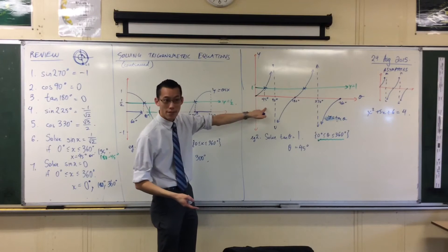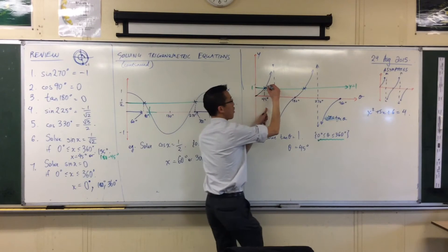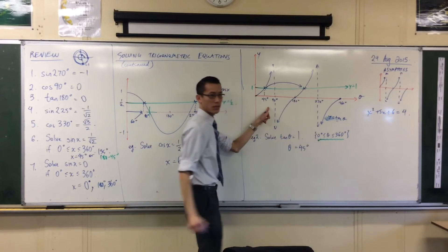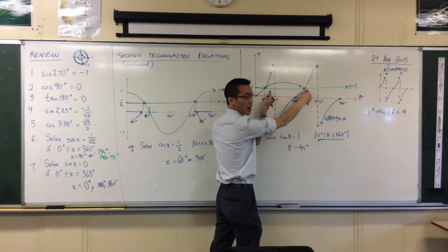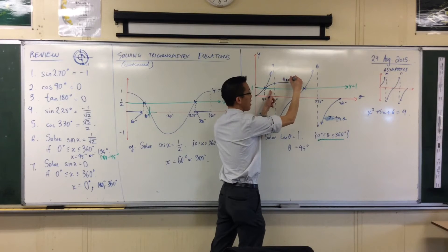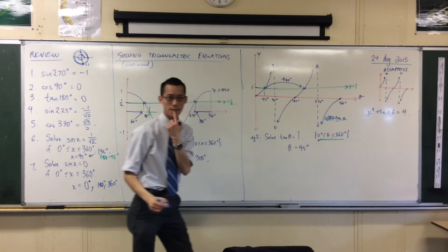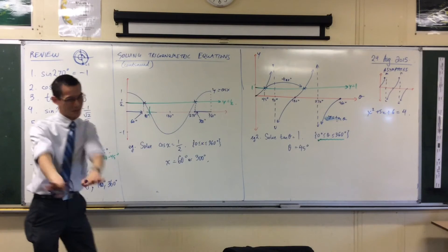So when I have 45 degrees here to get over to the next solution, can you see from here to here? It's 180, so from here to here will also be 180. So I'm going to go further as it's repeating. That's why we're doing this.